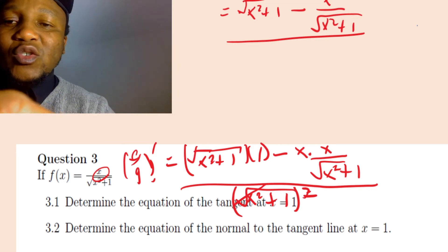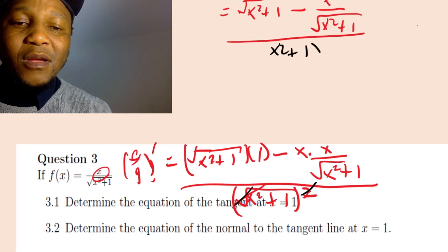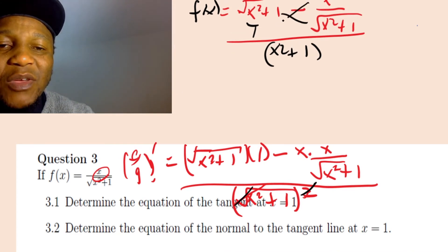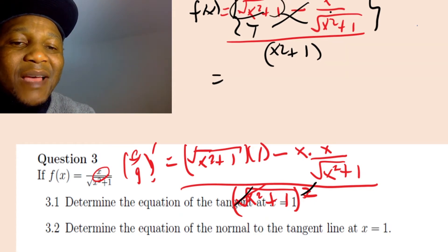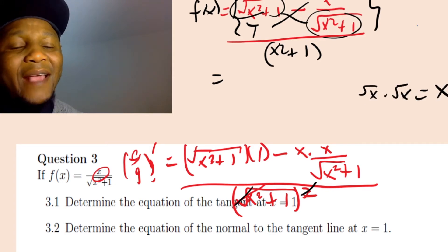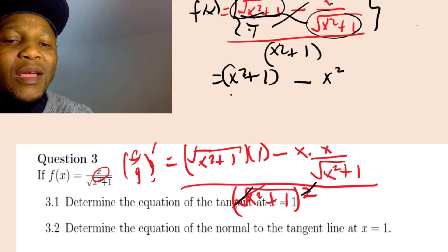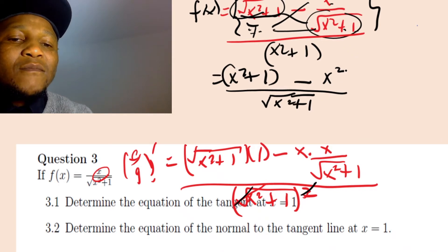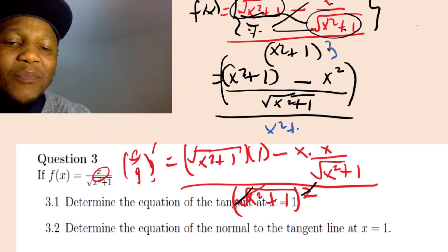When you square the denominator, the square root of x squared plus one times itself cancels the root, giving just x squared plus one. So the denominator becomes x squared plus one. In the numerator, we have square root of x squared plus one times one minus x times x over square root of x squared plus one. Multiplying through: square root times square root gives x squared plus one, minus x squared.